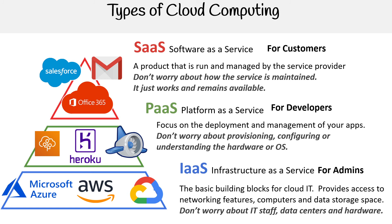When we talk about a cloud service provider, one of the key characteristics is that they have an Infrastructure as a Service offering. If they don't have that, we don't usually call them a cloud service provider — we just call them a cloud platform. Google Cloud originally was a cloud platform; they didn't have IaaS offerings, and that's probably where the origin of the name comes from.